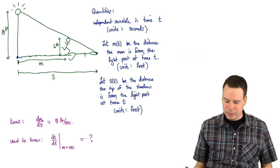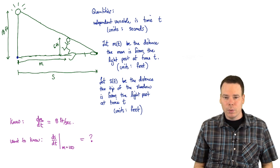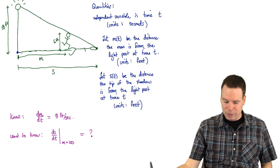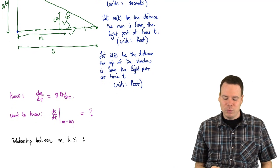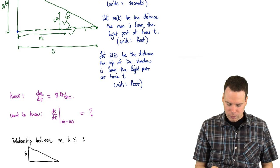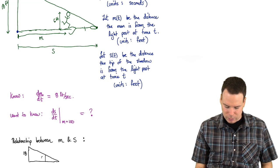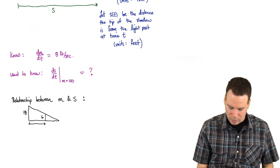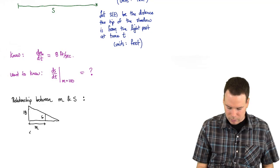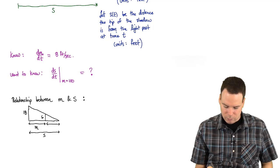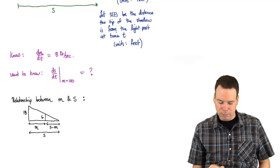We have all our quantities listed, so we'll proceed by finding the relationship between them using the diagram. We've got an 18-foot-high lamp post and a 6-foot-tall man. The distance from the post to the man is m, the distance from the post to the tip of the shadow is s, and the length of the man's shadow is s minus m.